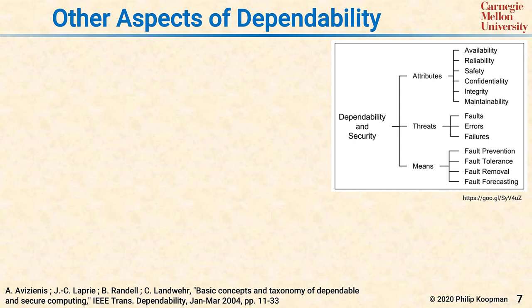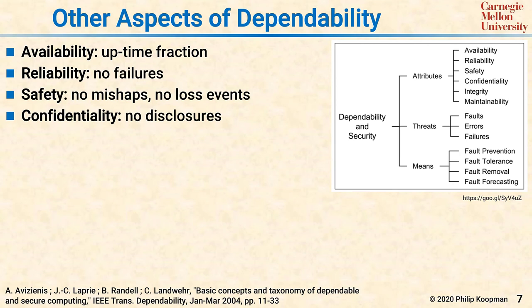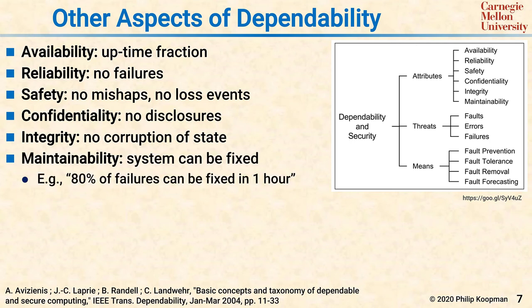There are a number of aspects of dependability to consider when designing a system. A 2004 paper, referenced at the bottom of this slide, contains these definitions and more. Key aspects of dependability include: availability — the uptime fraction; reliability — whether you can complete a mission with no failures; safety — a lack of mishaps and loss events; confidentiality — relating to disclosure of secret information; integrity — relating to corruption of computation state or messages; and maintainability — whether a system can be fixed as needed, for example within a one-hour turnaround time for an aircraft that needs to make its next flight.